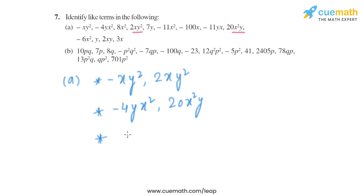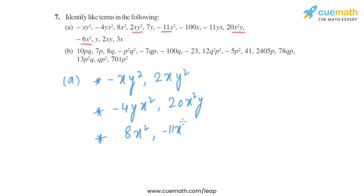Now the next term is 8X square. The variable is X and the power is 2. The like terms are minus 11X square and minus 6X square. So 8X square, minus 11X square, and minus 6X square are all like terms.